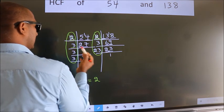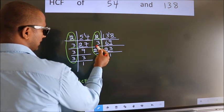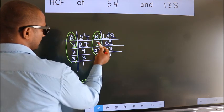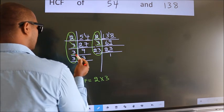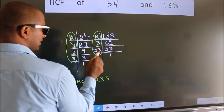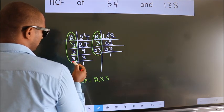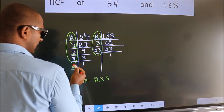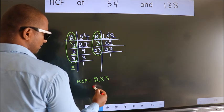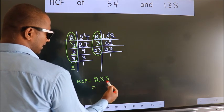Next number 3. Do we have 3 here? No. Next number 3. Do we have 3 here? No. Next number 3. Do we have 3 here? No. No more numbers have been left out. So our HCF is 2 into 3. 6 is our HCF.